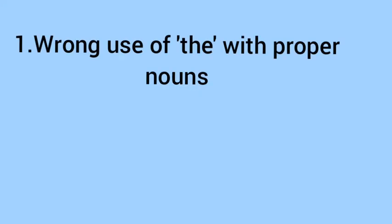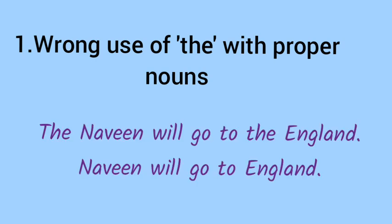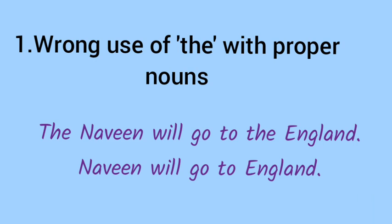Number 1: Wrong use of 'the' with proper nouns. Kabhi kabhi hum proper noun se pehle 'the' likh dete hain jisse ki sentence wrong ho jata hai. Look, it is written here: 'The Naveen will go to the England' — this is wrong. 'Naveen will go to England' is right.